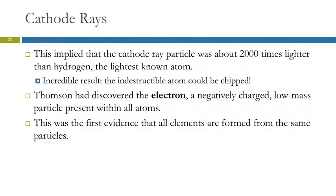What this implied was that that cathode ray particle was about 2,000 times lighter than hydrogen, which was the smallest and lightest known atom. This was a bit mind-blowing for these people because they believed that the atom was the smallest particle. So how could you have these cathode ray particles that are 2,000 times smaller than the atom? The atom must be composed of smaller pieces because here they've chipped little pieces off of the atom. This was incredible.